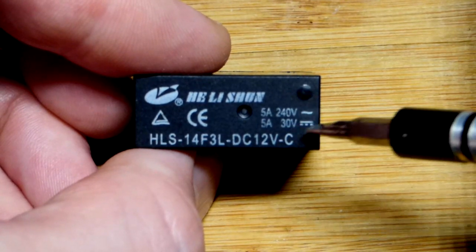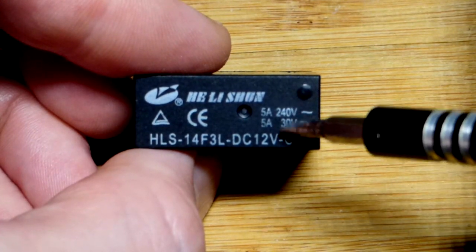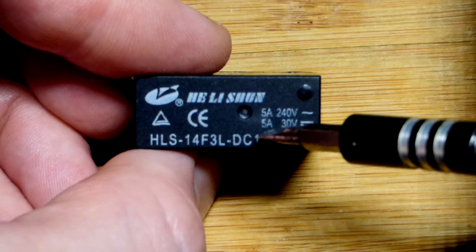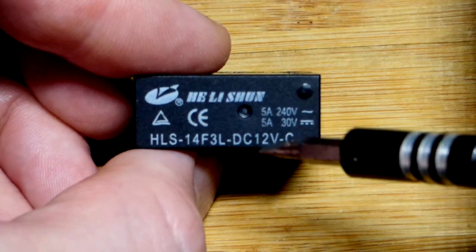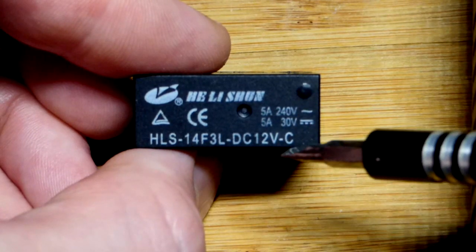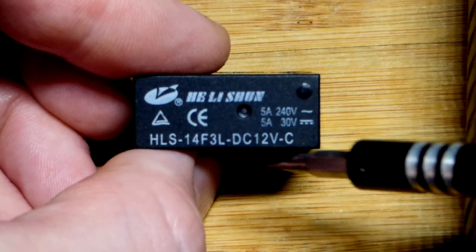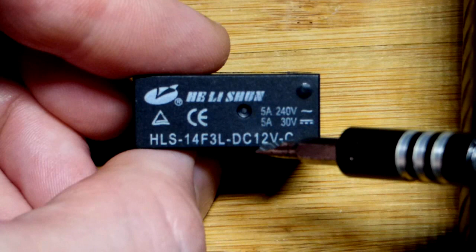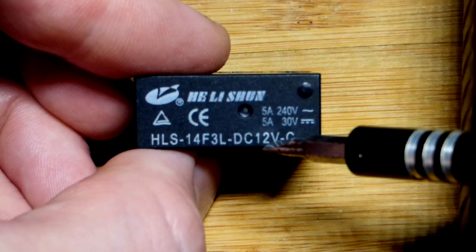And 30 volts, direct current or on-off current. So usually you'll probably be working with direct current. Again, 5 amps. They usually put the voltage for the coil right there. So that's to switch it on or off. It's a direct current of 12 volts.